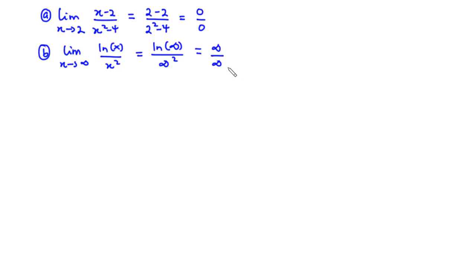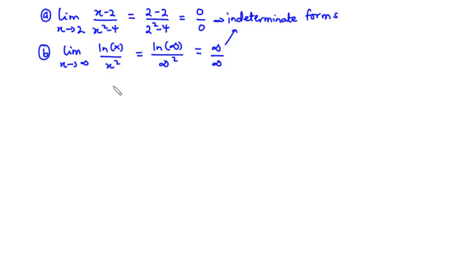We do not know exactly what 0 over 0 is, nor do we know what infinity over infinity is, so we call these indeterminate forms. Whenever you evaluate a limit and direct substitution gives you either of these two forms — 0 over 0 or plus or minus infinity over plus or minus infinity — you can use a different approach called L'Hôpital's rule, which is exactly what we will discuss today.